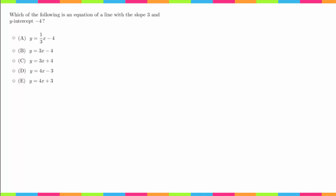So in order to do this problem, we are going to have to remember what slope intercept form is. Slope intercept form is y equals M times x plus b.